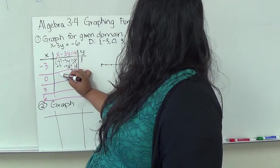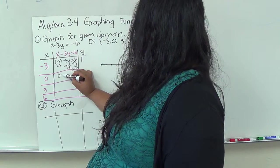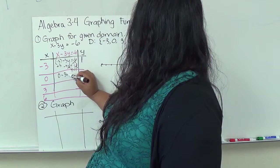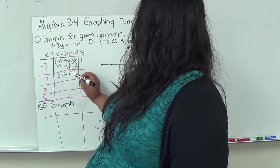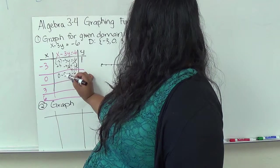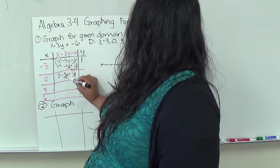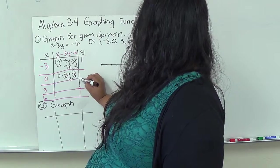I'm going to do 0 minus 3y equals negative 6. I'm going to go ahead and divide by negative 3. I end up with y equals positive 2.